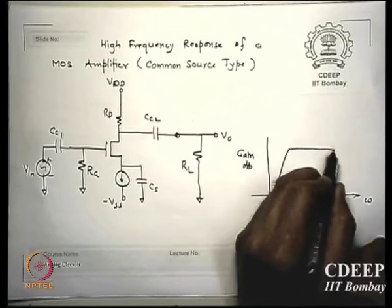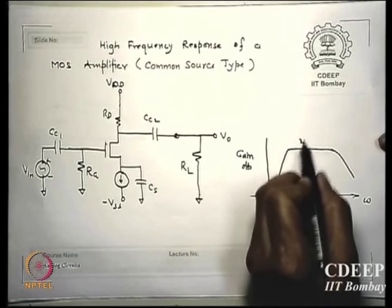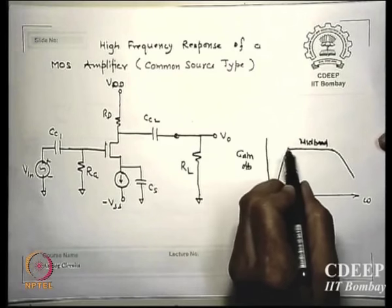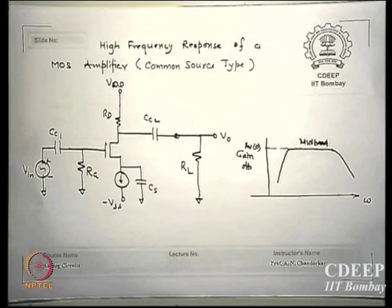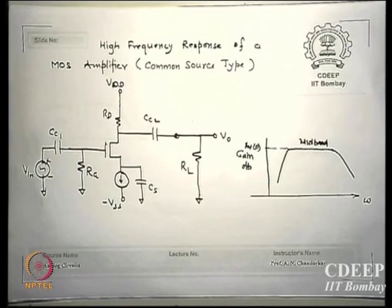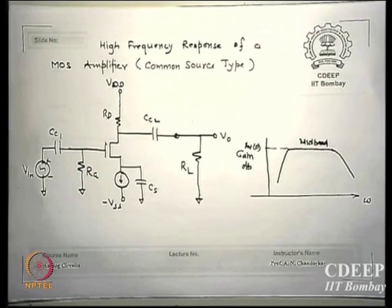The frequency region where gain is constant is called the mid-band, and we call that gain AV0. The subscript 0 does not mean zero frequency — in AC-coupled amplifiers, DC gain means mid-band gain, which is what you get when you remove all capacitances. This is different from op-amp DC gain, which truly includes zero frequency.